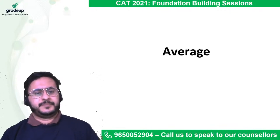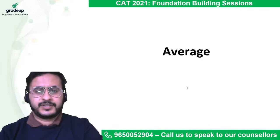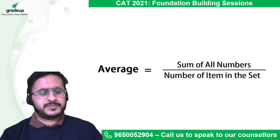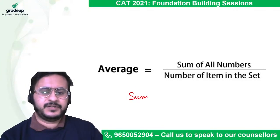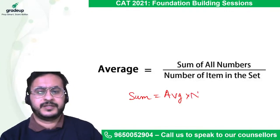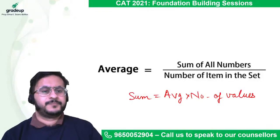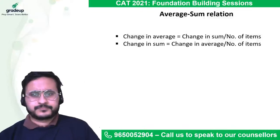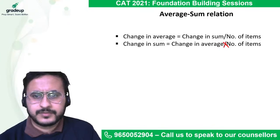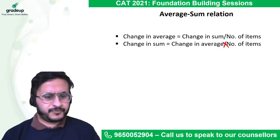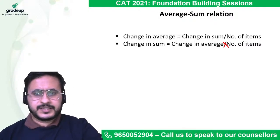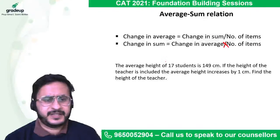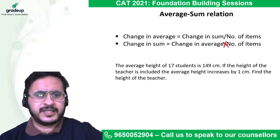Another important concept for data interpretation is averages. Average is the sum of numbers upon the number of items, or equivalently sum = average × number of items. An important concept tested in quant: change in sum = change in average × number of items.